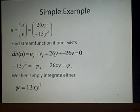That gives us our function here: phi equals 13xy squared. We can also check that in this example there is no potential function.